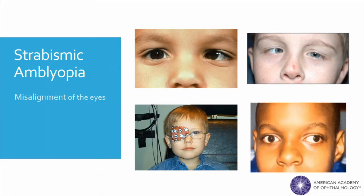Strabismus describes the eyes when they are not straight and instead pointing in two different directions. The eyes may be misaligned vertically, horizontally, obliquely, or in a combination. In this picture, the child's right eye is turned in, called esotropia, and in this picture, this child's eye is turned out, called exotropia. Because the eyes are misaligned, the brain receives two unfusible images, so it turns off or ignores the eye that isn't straight to avoid seeing double.